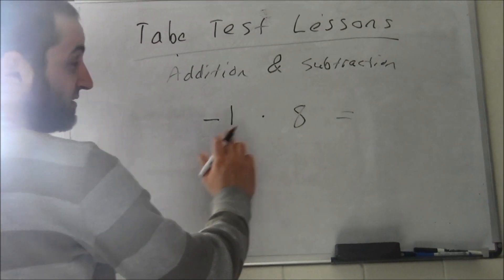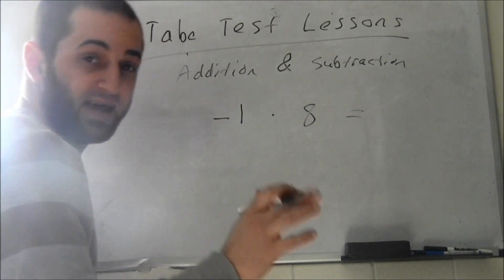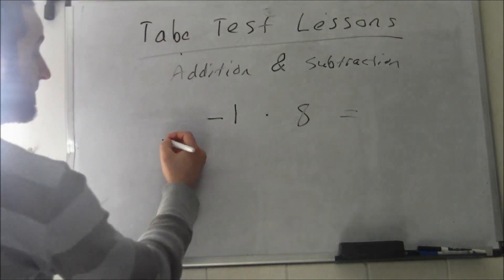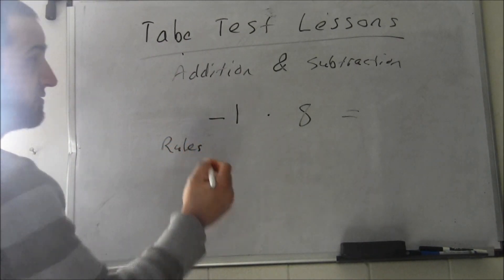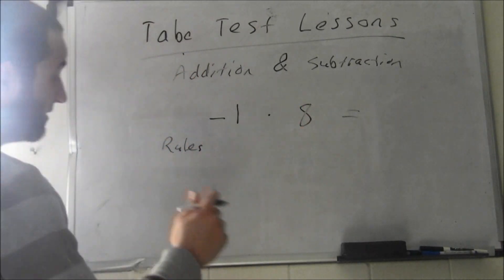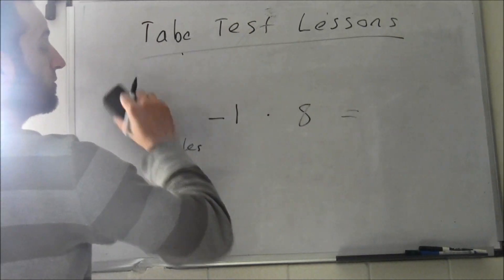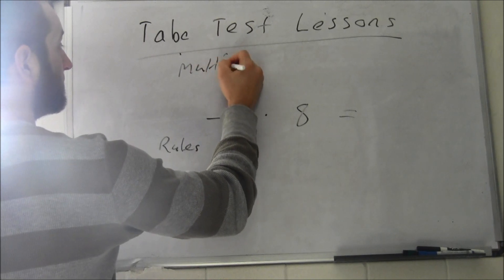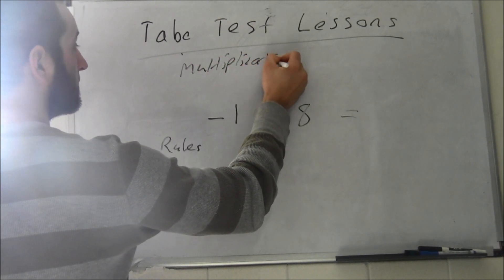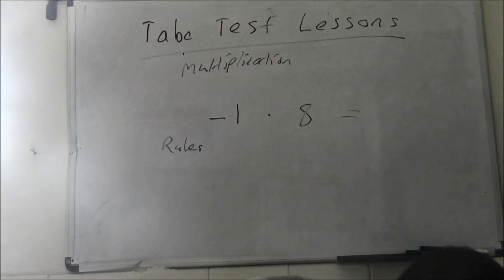We've got negative one times eight. Whenever you have a negative, the rules are - let's put some rules over here. This is Tabe Test Lessons, for multiplication.